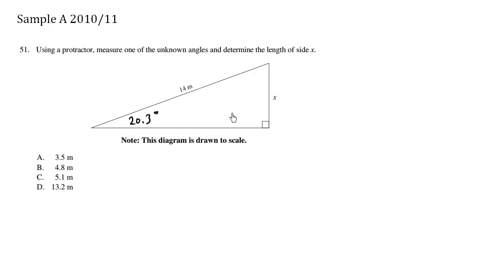So SOH CAH TOA says we have the opposite and the hypotenuse, so we're going to use the sine ratio. So the sine of the angle, 20.3 degrees, is equal to opposite over hypotenuse, which is x over 14 meters. Going to multiply both sides by 14, we end up with x is equal to 14 sine 20.3 degrees.